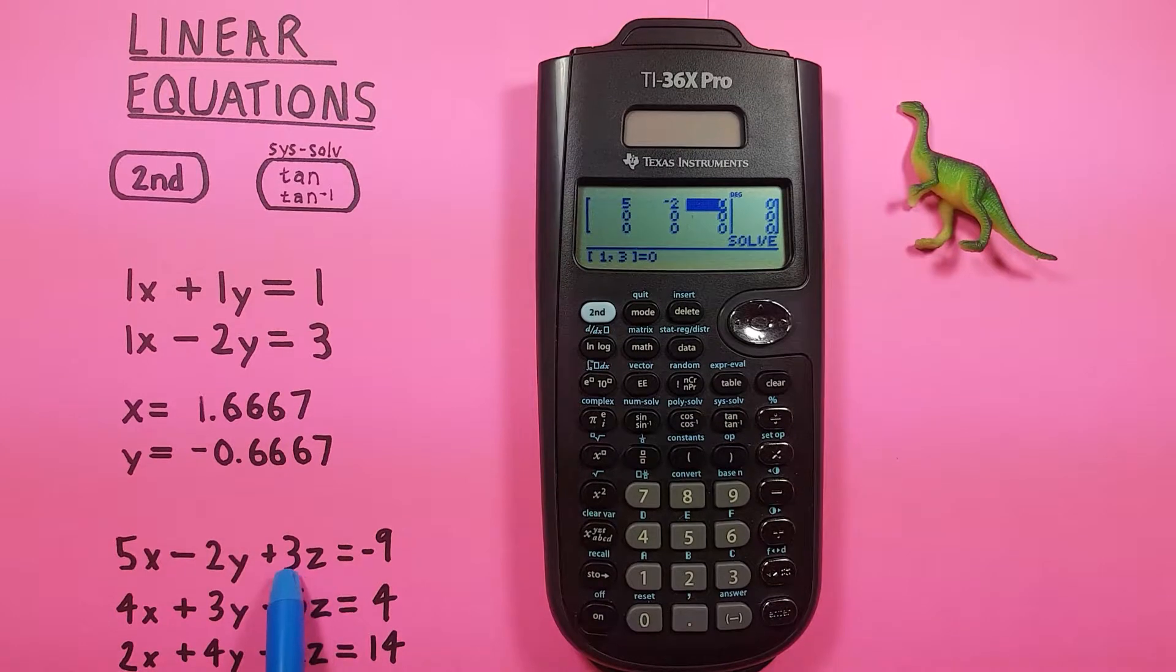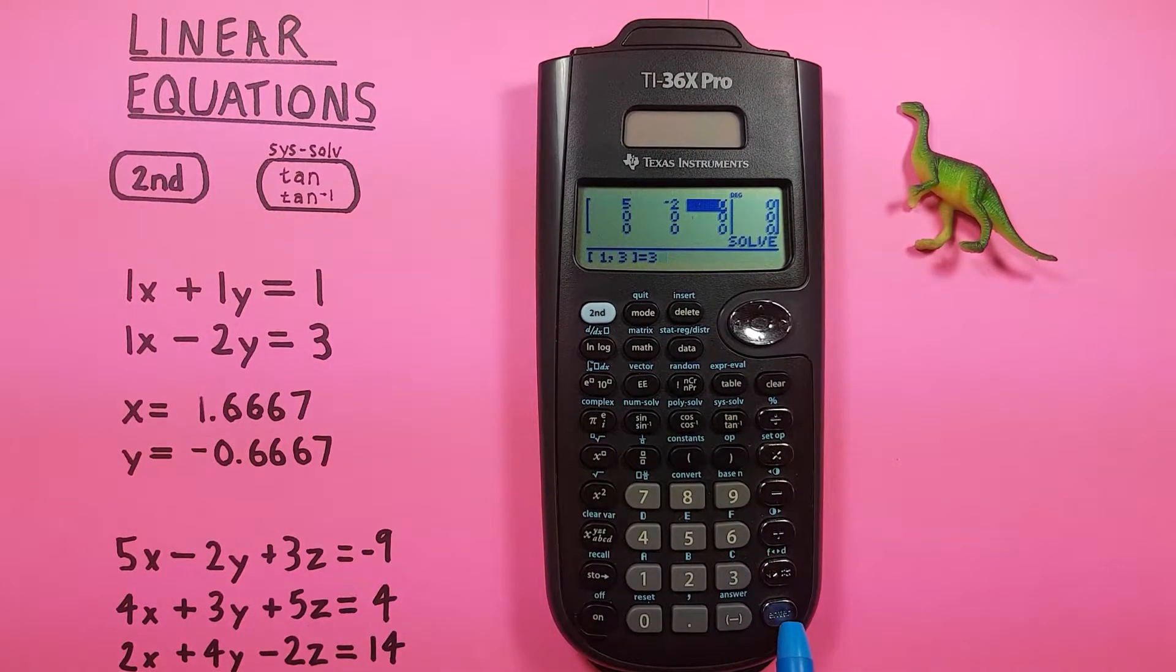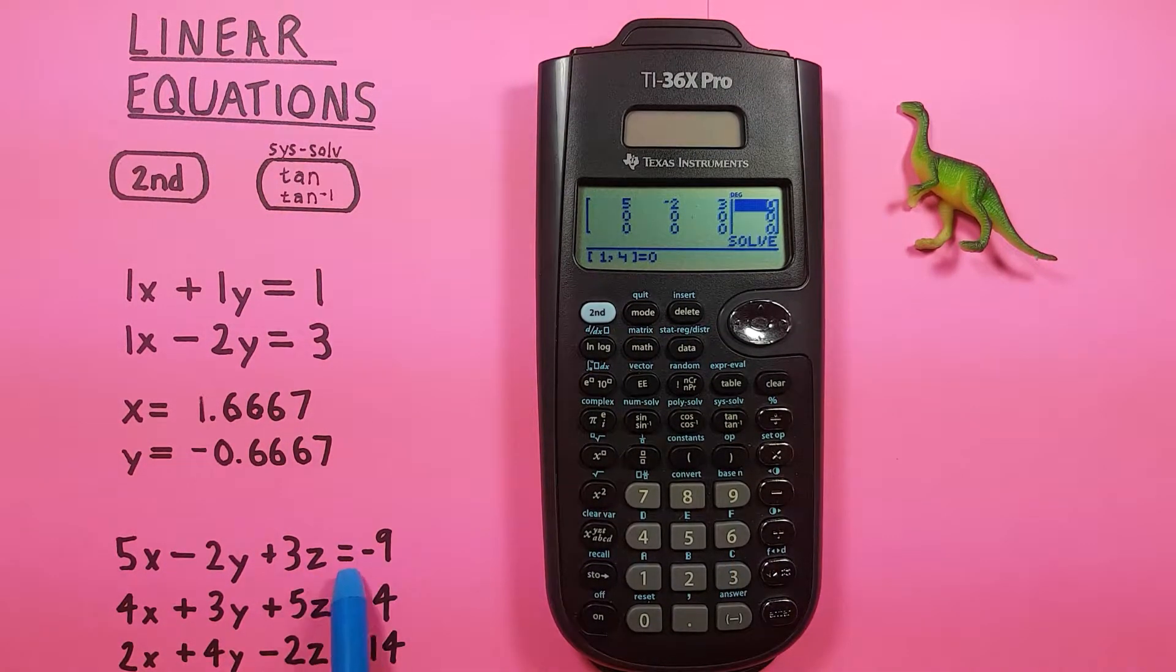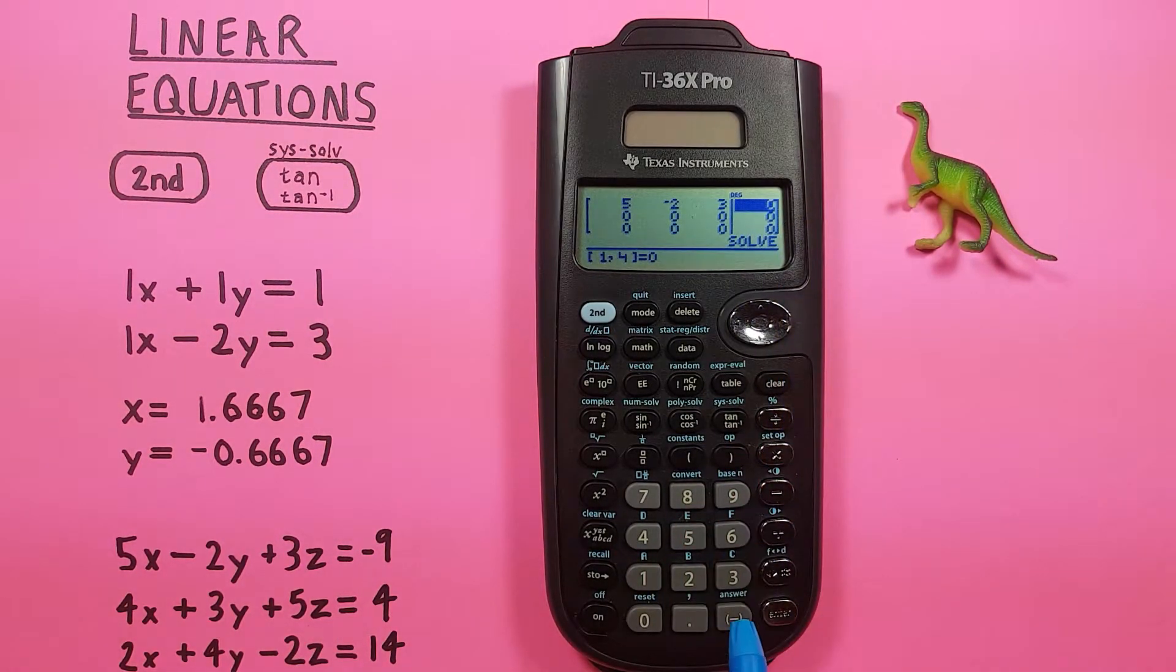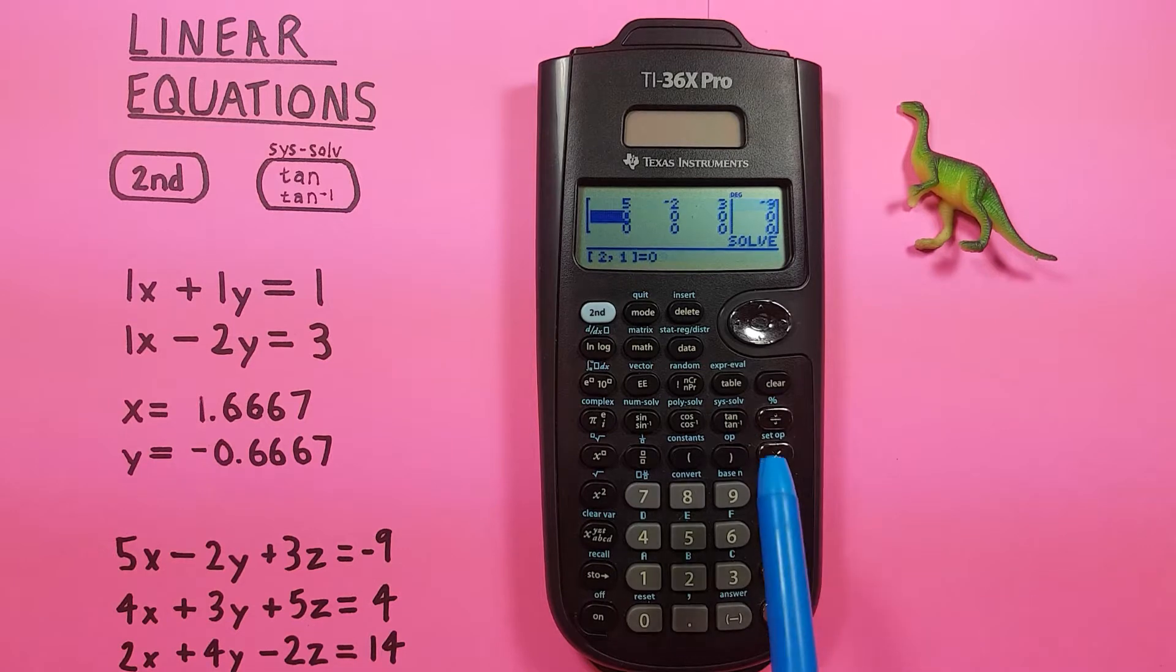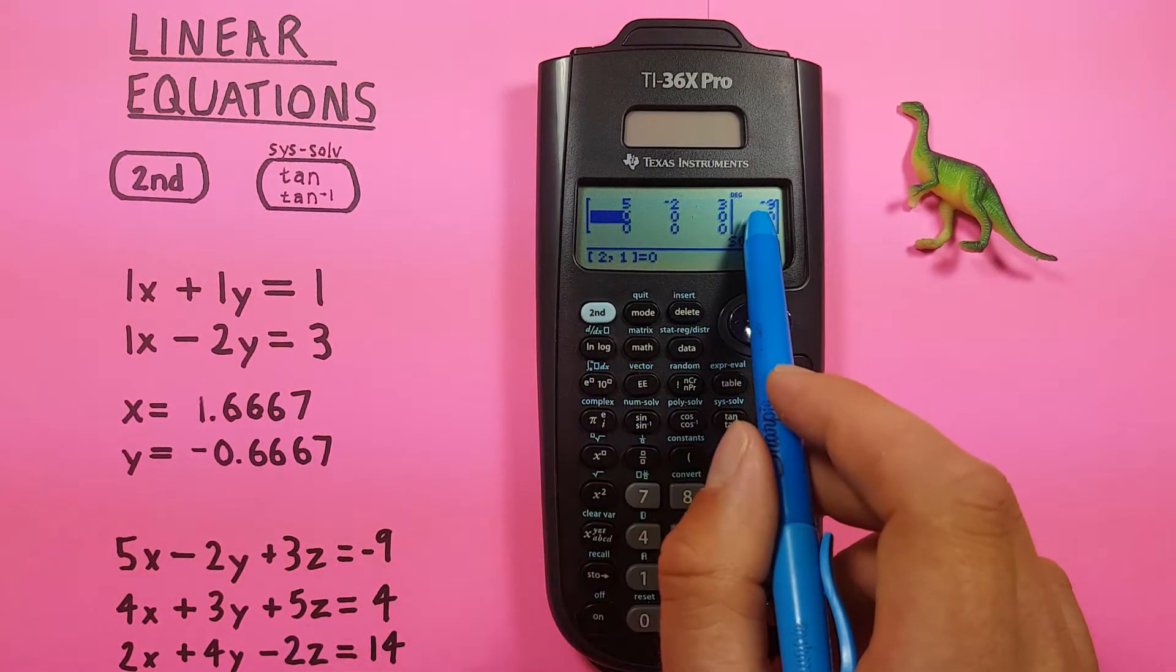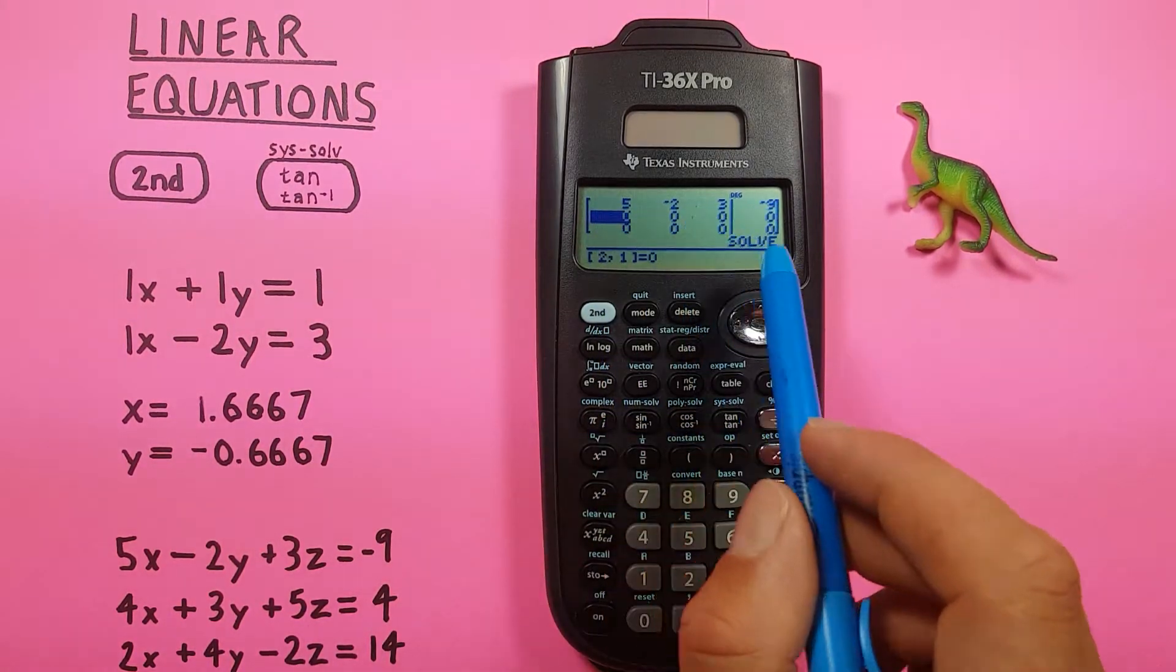And then 3, for 3Z, there we go. And equals negative 9. This one, last one here is our negative 9, enter. So there you see our first equation entered into the matrix.